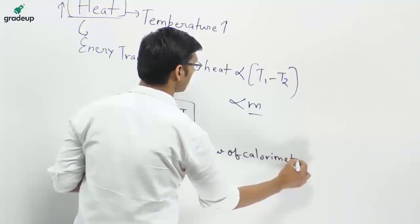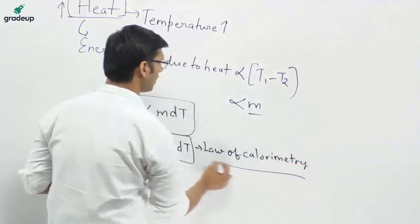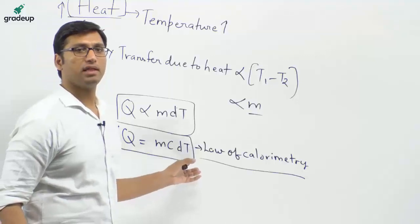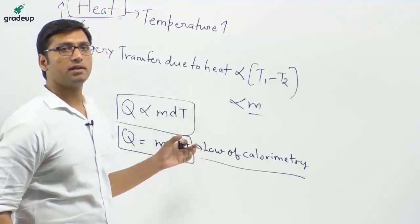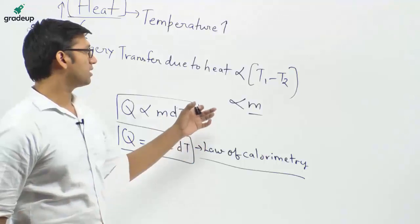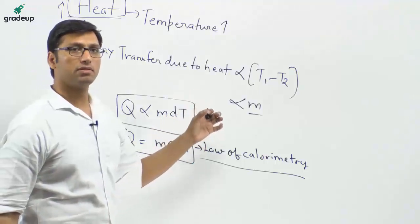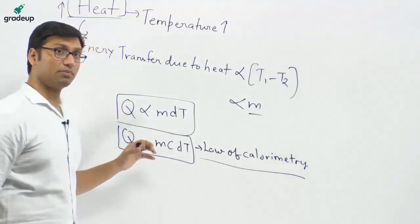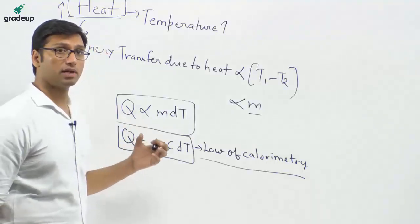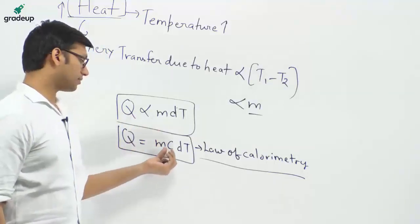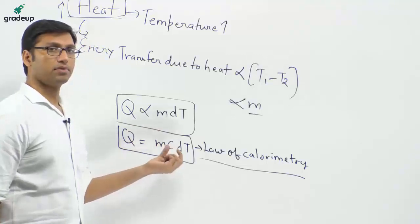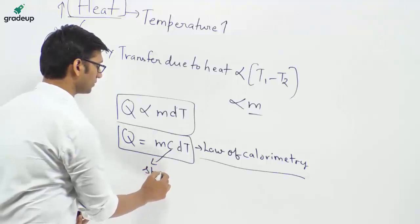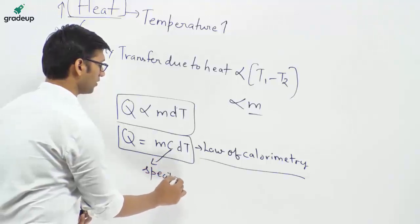From the calorimetry principle, heat transfer is equal to mC dT — meaning heat transfer between two bodies in contact is directly proportional to the temperature difference and the mass of the body. By removing the proportionality constant, you get this C term. C is known as specific heat.